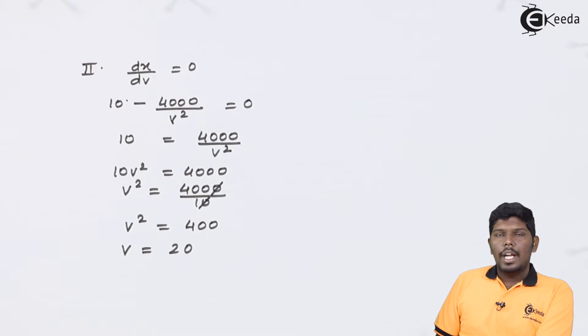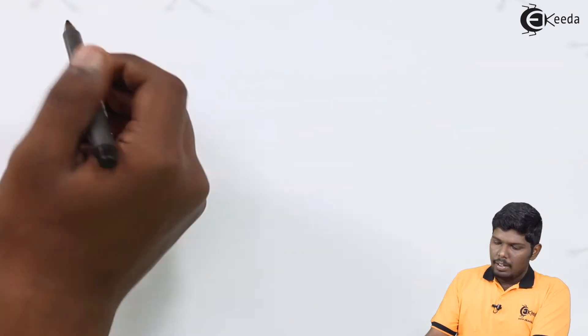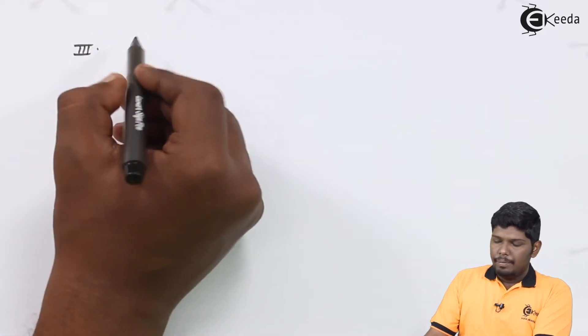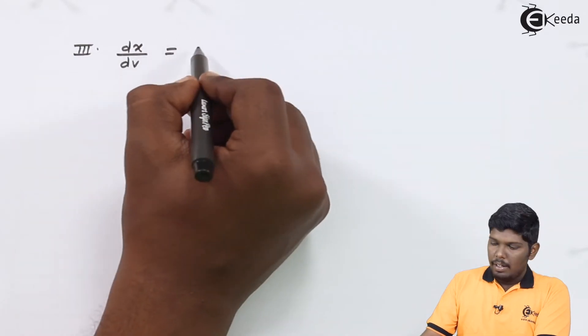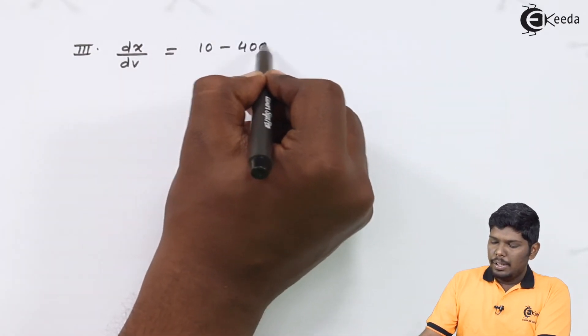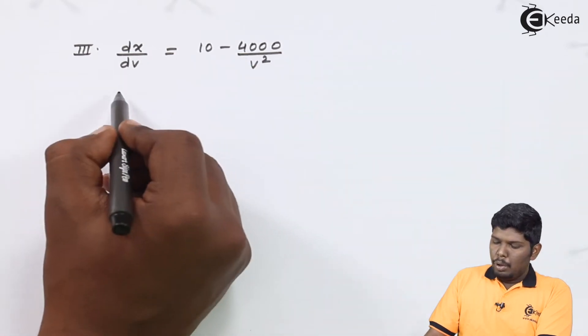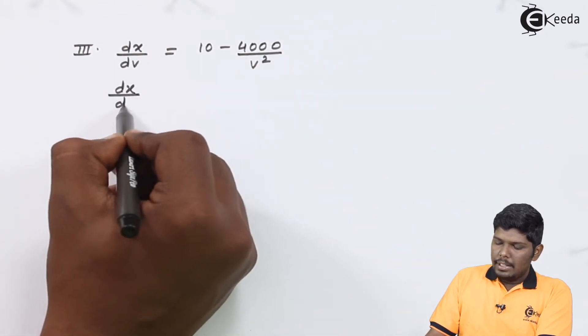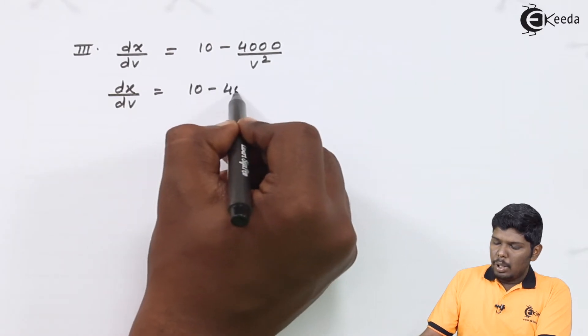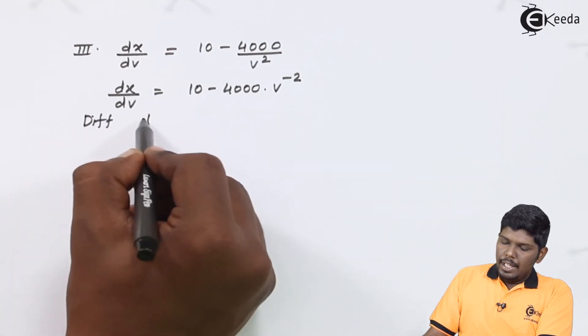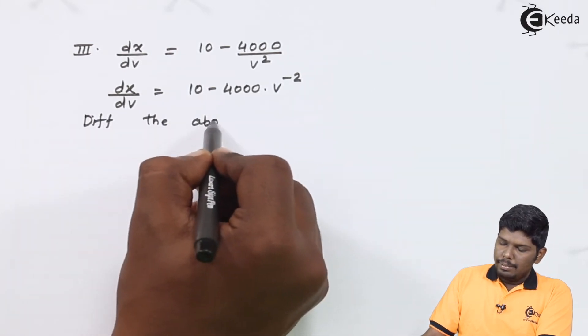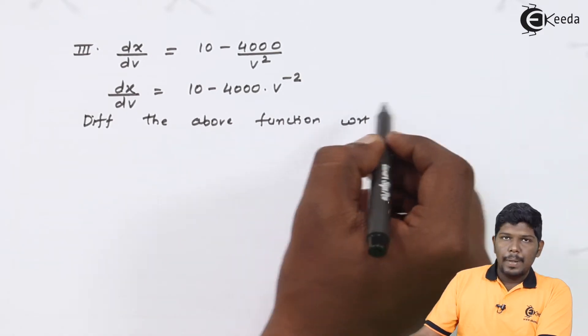The next step will include taking the second order derivative in order to check for this speed whether the work rate is maximum or minimum. In step number 3, the value of dX by dV we have is 10 minus 4000 upon V square. Before differentiating, we can write it as 10 minus 4000 into V raised to minus 2. Differentiating the above function with respect to V.